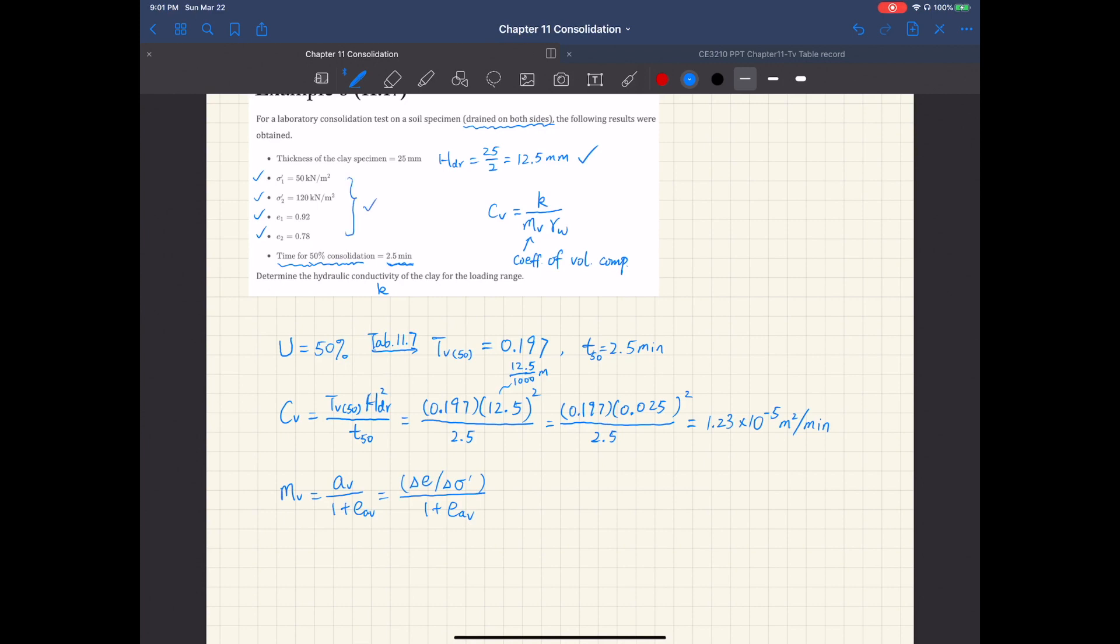Given the consolidation test data, delta e is 0.92 minus 0.78, that's 0.14, and delta sigma prime is 120 minus 50, 70 kilonewtons per meter squared. And then for eav we're going to use one half of e1 plus e2.